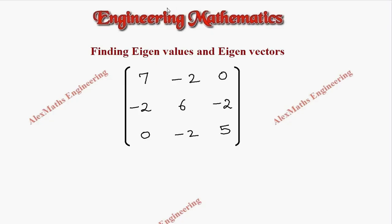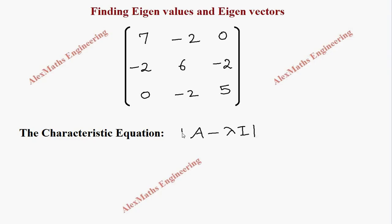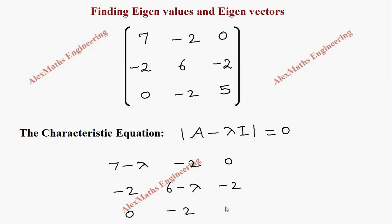Hi students, this is Alex. In this video we are going to find the eigenvalues and eigenvectors for the given matrix of order 3. As a first step we have to write the characteristic equation, which is |A minus lambda I| = 0. So this is the matrix: 7 minus lambda, minus 2, 0; minus 2, 6 minus lambda, minus 2; and 0, minus 2, 5 minus lambda.